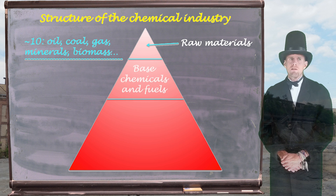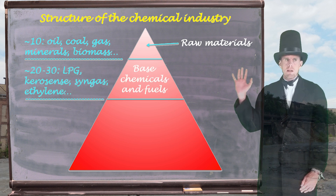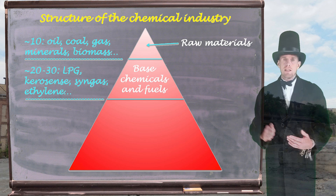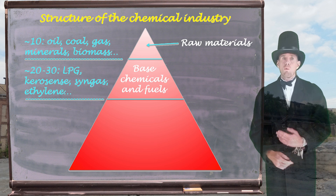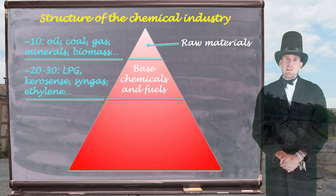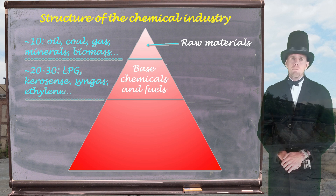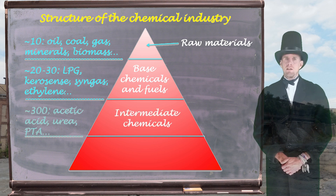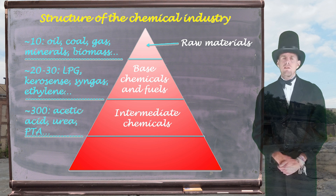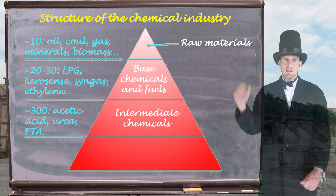These raw materials in the chemical industry are turned into either what we term base chemicals — things such as ethylene or synthesis gas — or fuels such as liquefied petroleum gas, kerosene, or motor gas. Synthesis gas, ethylene, benzenes, toluenes, xylenes — these are all things we will be encountering later on. But from these base chemicals, intermediate chemicals are made, and there's actually quite a large number of intermediate chemicals — hundreds of different types.